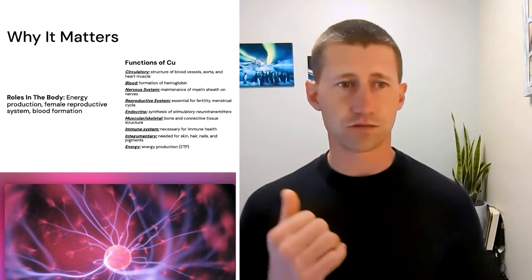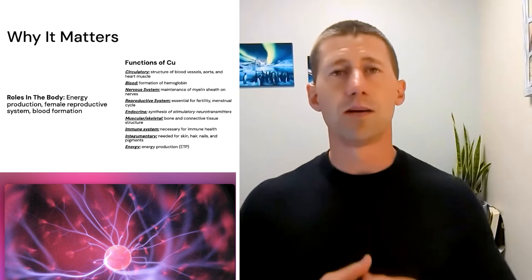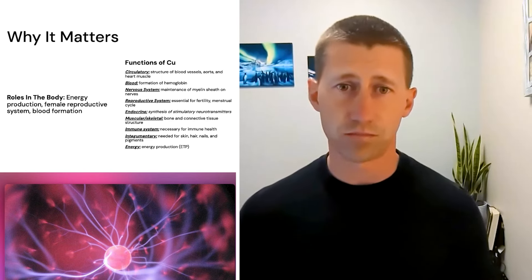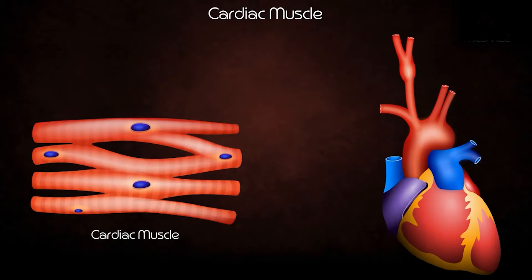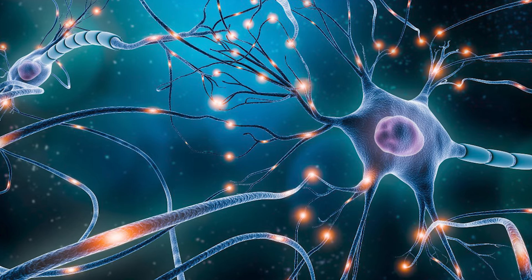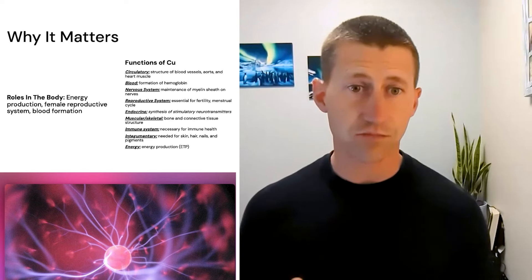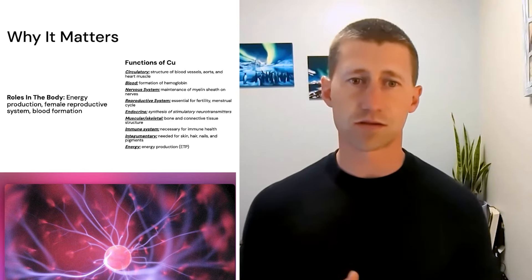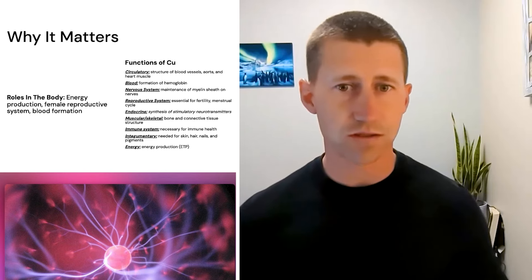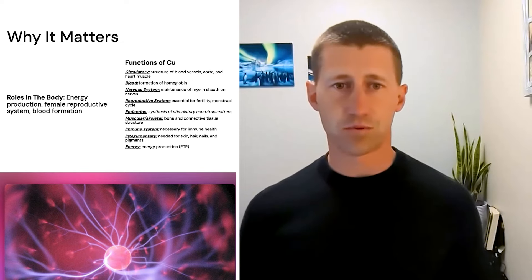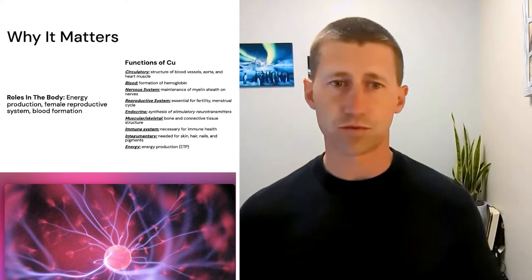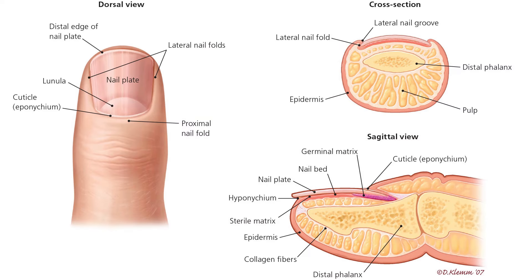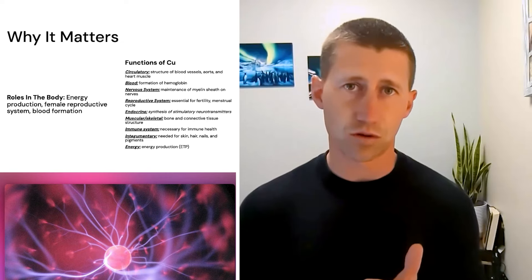Listen to how many of these functions within the body that copper is actually used. In a basic sense, it's used for energy production, female reproductive system, and blood formation. It's involved in the circulatory system, so the structure of your blood vessels, your aorta, and your heart muscle. It's responsible for your blood, the formation of hemoglobin. It's responsible for helping with the nervous system, maintaining the myelin sheath around your nerves. Reproduction system, it's essential for fertility and the menstrual cycle. It's responsible for the endocrine system, the synthesis of simulating your neurotransmitters. It's responsible for muscular and skeletal health supporting bone and connective tissue structure. It helps with immune system. It's also helping for your skin, your hair, your nails, and your pigment. And then lastly, energy production, mostly your electronic transport chain.